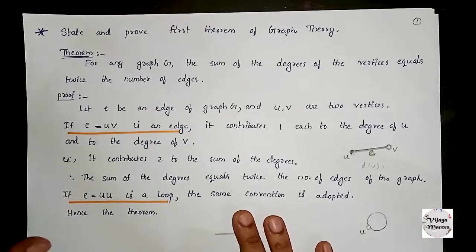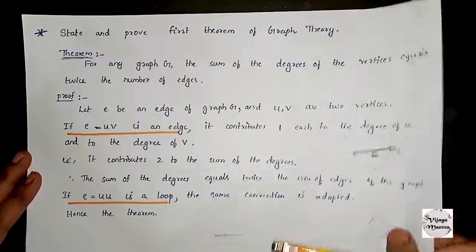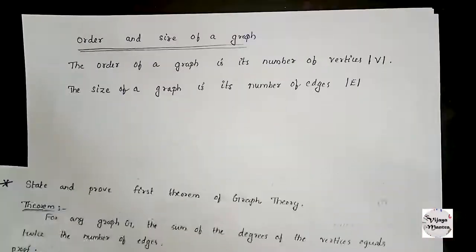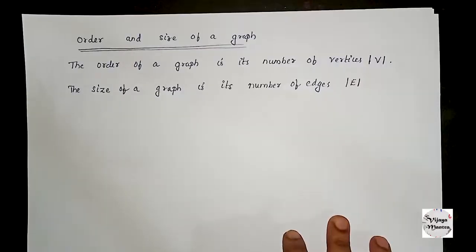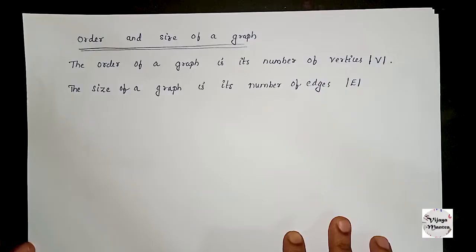We will now discuss the definition of order and size of a graph. The order of a graph is its number of vertices, that is, the cardinality of V. The size of a graph is its number of edges, that is, the cardinality of E.